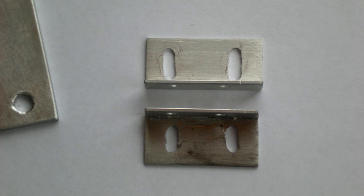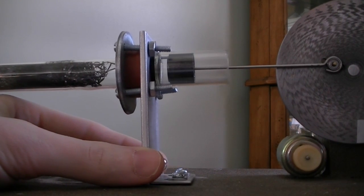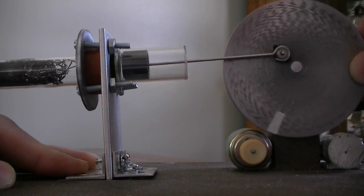The purpose of drilling slots through the brackets rather than just one hole is to allow the aluminum support column to move closer or further away from the flywheel.